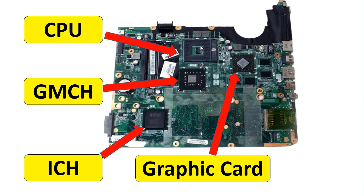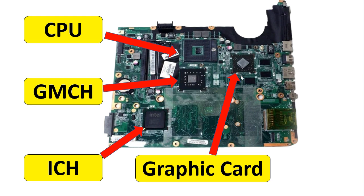In the older board, the four chips are separated: the processor, the AMCH (not the GMCH, because the graphic card is separate), the graphic card, and the ICH — four chips separated.